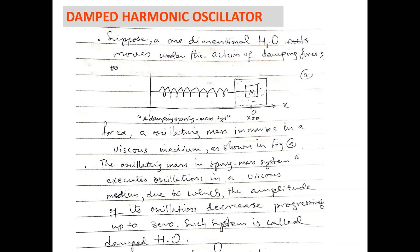Now, suppose a one-dimensional harmonic oscillator which is moving under the action of damping force. Here is a damping spring-mass system in which oscillating mass dips in a viscous medium. The oscillating mass is executing oscillations in this medium, but the amplitude of its oscillations decrease progressively up to zero. This is called damped harmonic oscillator.